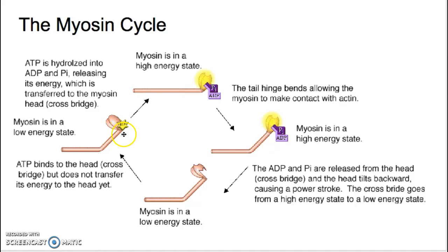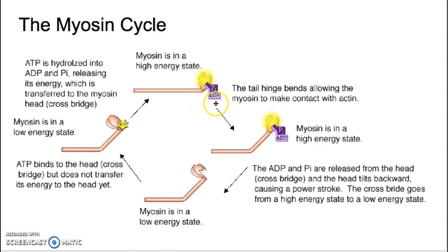ATP has to go through hydrolysis — hydro meaning adding water, lysis meaning breaking a bond. We're going to break the bond between the second and third phosphates of ATP, and that bond energy is going to be transferred to the cross bridges of myosin. Hydrolysis occurs, and what we're left with is ADP, a phosphate group, and these energized cross-bridge heads — myosin in its high energy state.